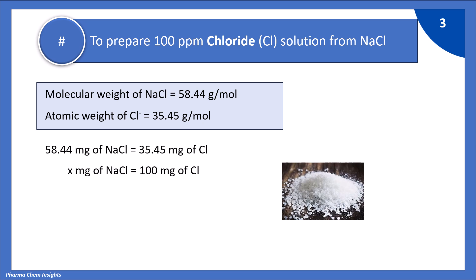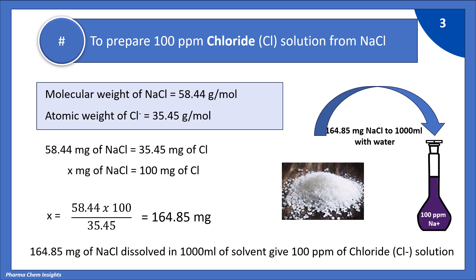So, x mg of NaCl is equivalent to 100 mg of chloride. Therefore, x is equal to 58.44 × 100 divided by 35.45. By doing the calculation, we get 164.85 mg. Hence, 164.85 mg of NaCl dissolved in 1000 ml of solvent gives 100 ppm chloride solution.